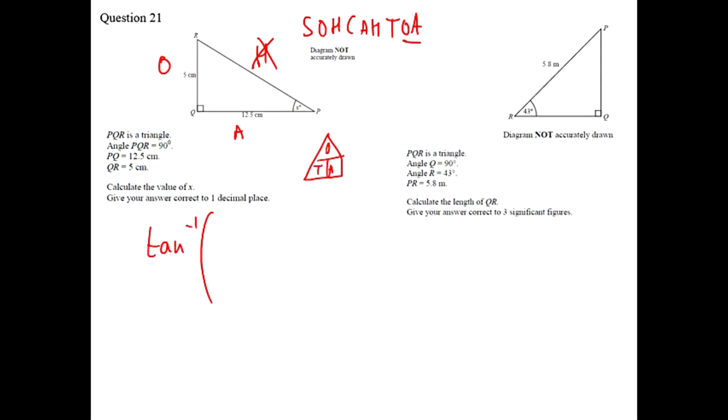So we're finding the angle so we do O divided by A and it's 5 divided by 12.5. And you type that on a calculator you'll get 21.8 degrees.